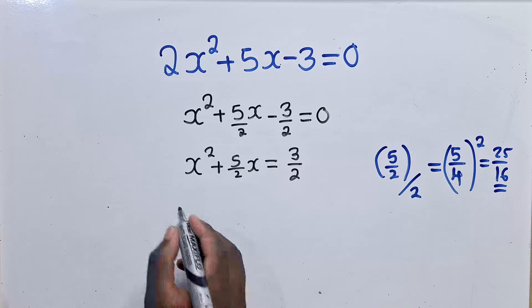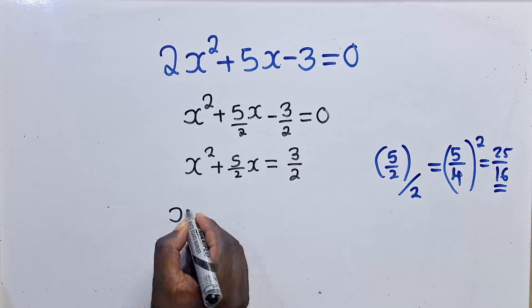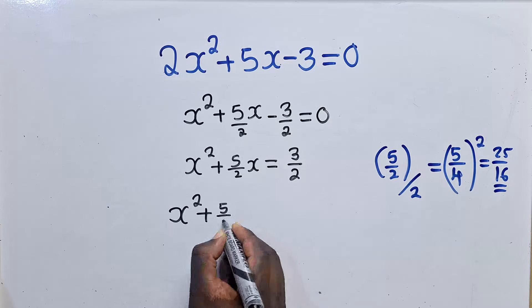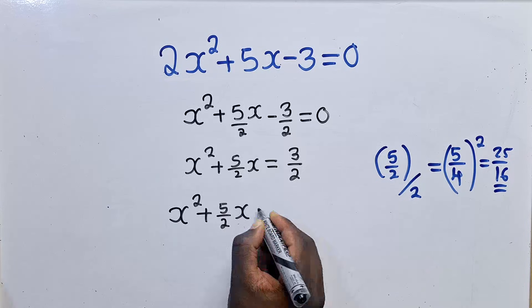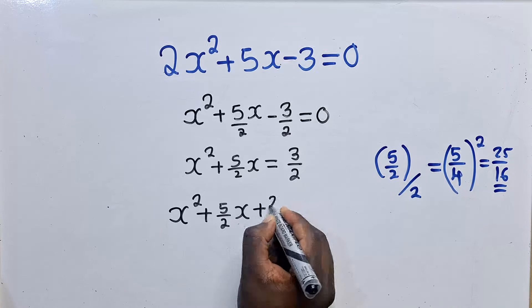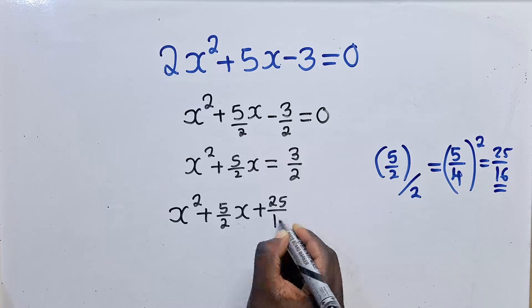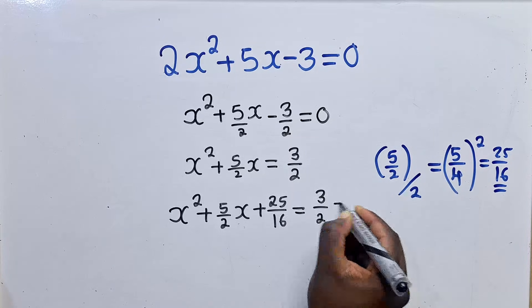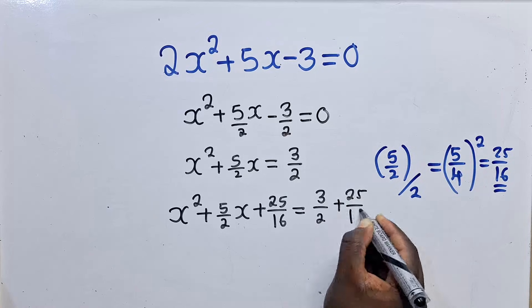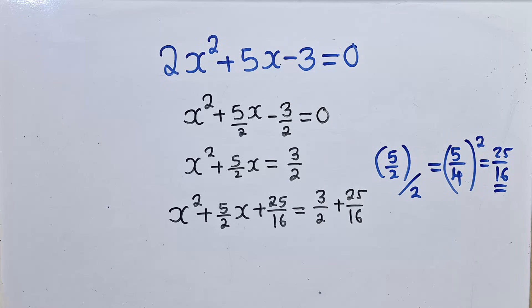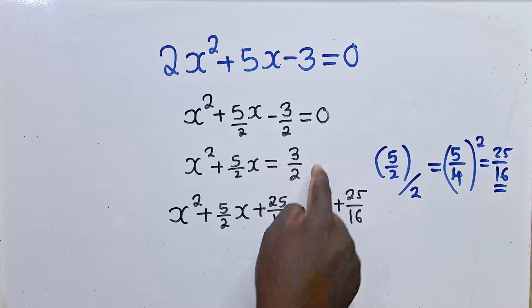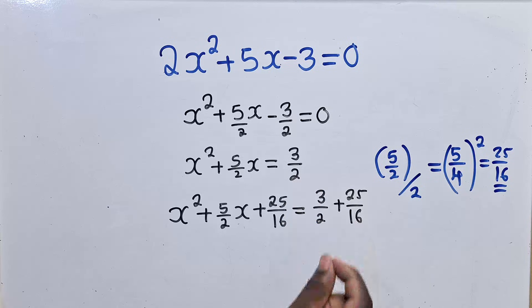So now when you do that, you're going to say x² + (5/2)x + 25/16 = 3/2 + 25/16. The 25/16 should be added to both sides of the equation — I've added it to this side and also the other side, and this is how it is.